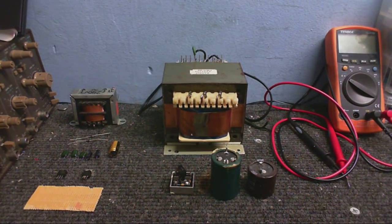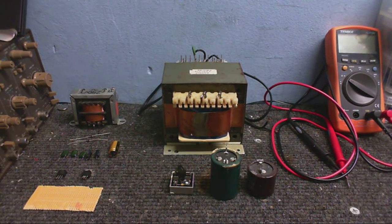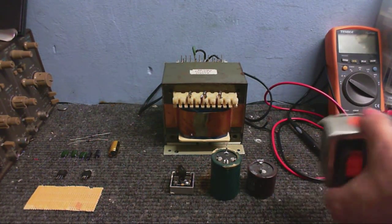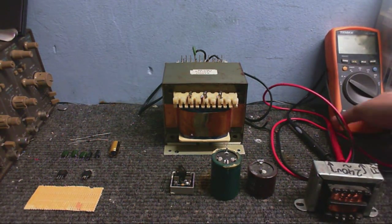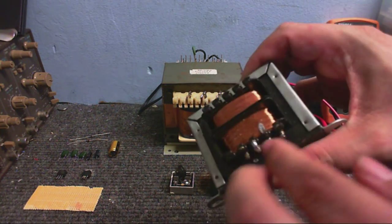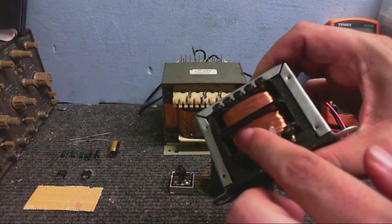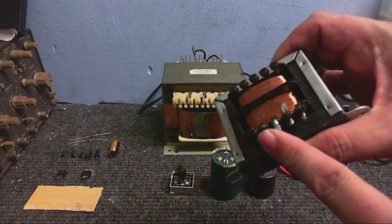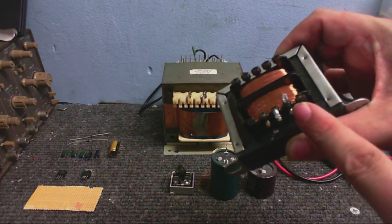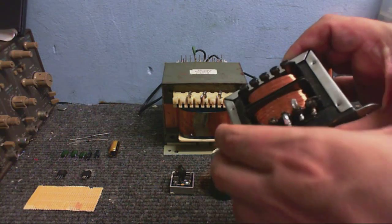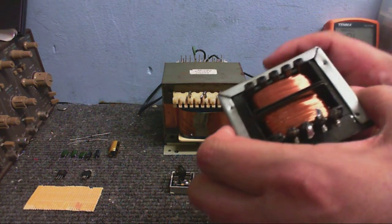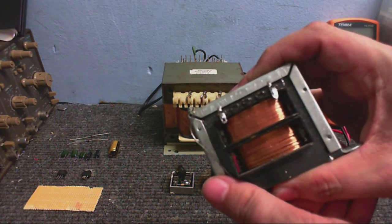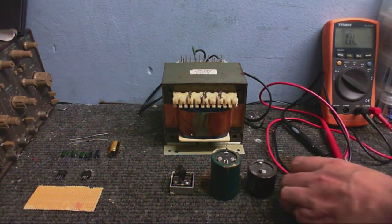So anyway, what we're going to do first is determine the primary and secondary of the transformer. Now, I already know which is the primary and the secondary, but this is how you find out. We've got two connections there, and we've got four connections there. Now, I know for a fact that this transformer has two secondaries, which are connected here. And this side, with just two connections on it, is the primary. And if you're still not sure, there's a way you can find out.